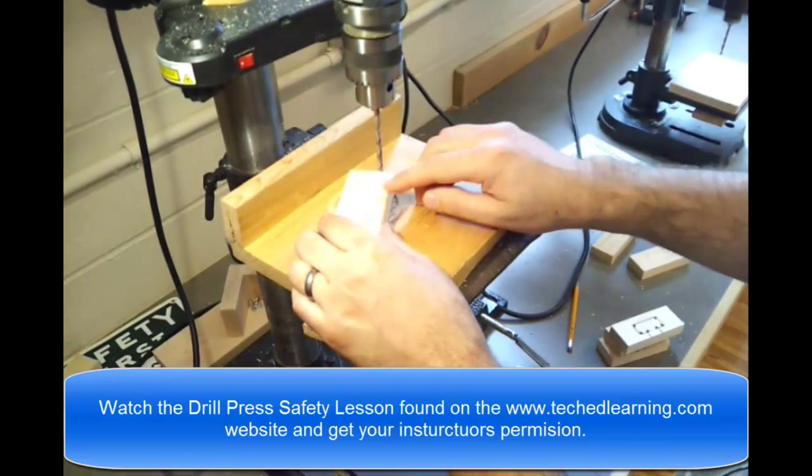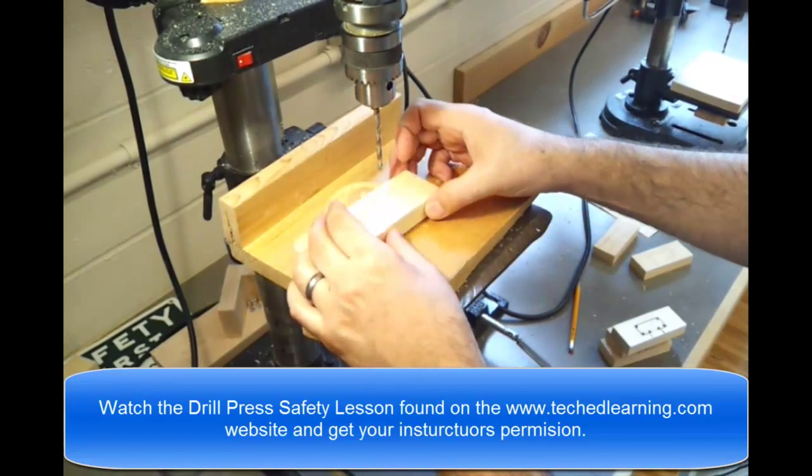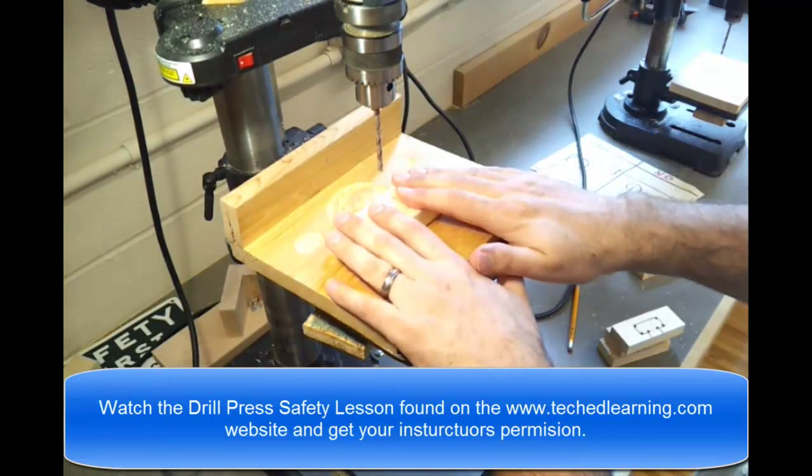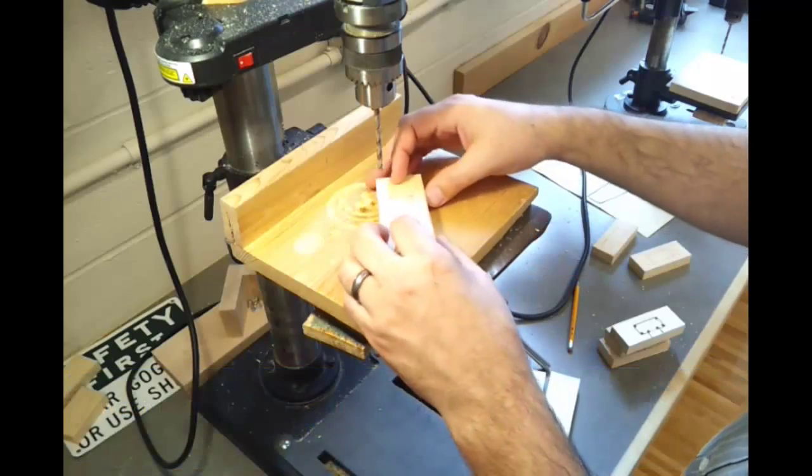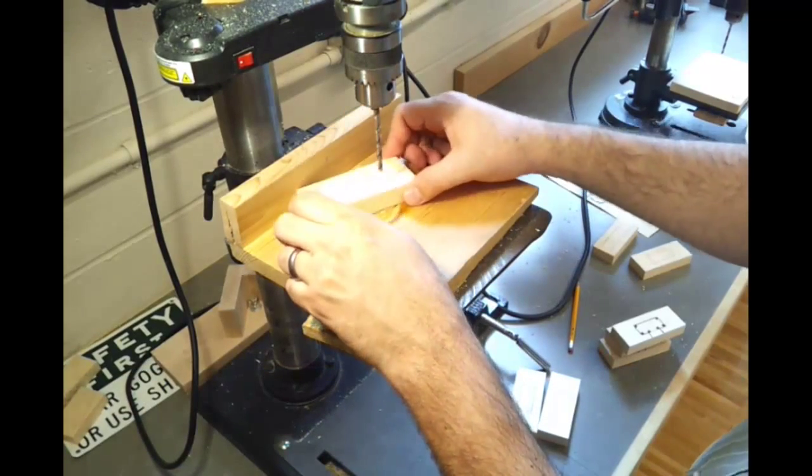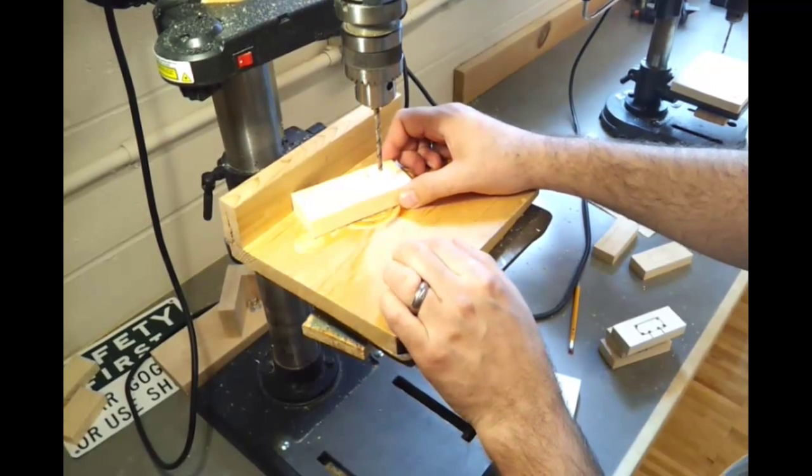The drill press as it goes down into the wood is going to want to actually pick this block of wood up, so make sure you're putting some down pressure onto the table and keep it from spinning as well. A good idea is to have a backstop, which would keep a piece from spinning around in a circle.